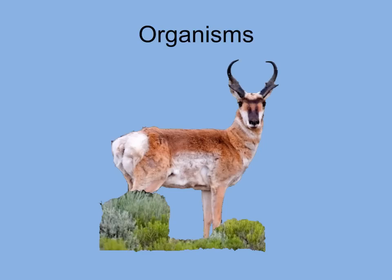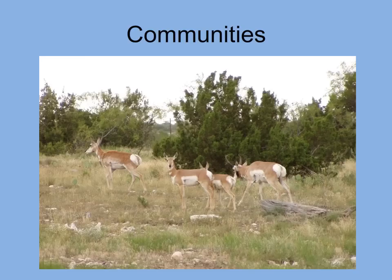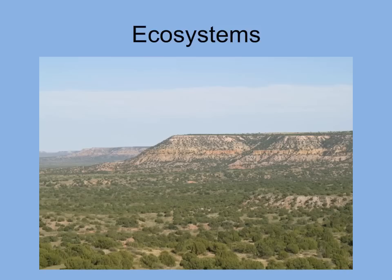Multicellular organisms, such as this pronghorn, rely on their various organ systems to maintain homeostasis and keep them alive. A group of organisms that are the same species is a population. Organisms capable of breeding with one another to produce viable offspring are in the same species. A collection of different species that interact in a certain area is called a community. The pronghorn, insects, junipers, and grasses belong to this West Texas community.